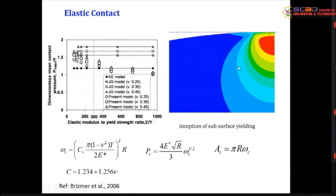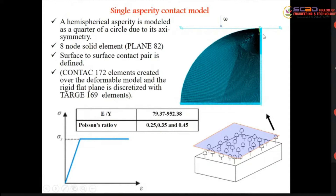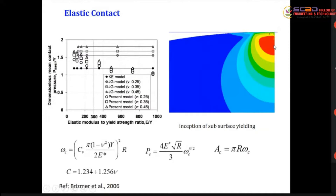Once the rigid plane begins to interfere with the axisymmetric model, the interference omega is slowly increased. What happens is that the material starts to yield just below the contact surface — not at the exact contact point. This subsurface yielding initiates at that location and slowly propagates to the outer surface. Initially, the asperity is in an elastic condition.